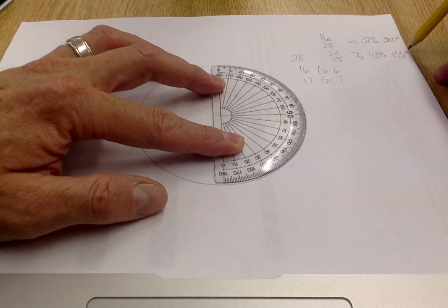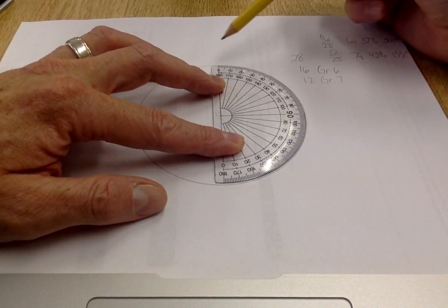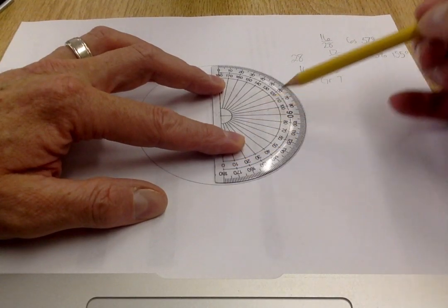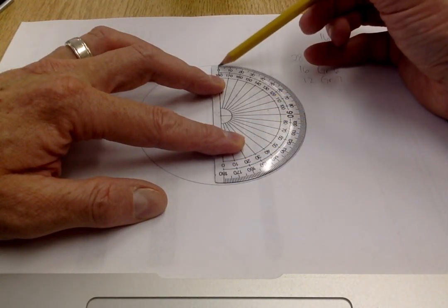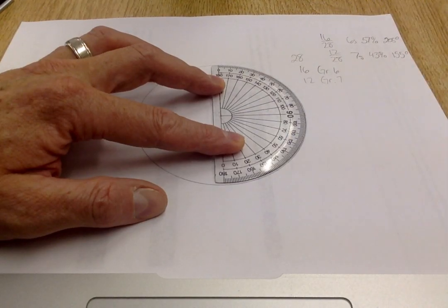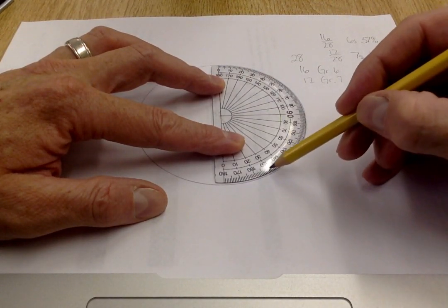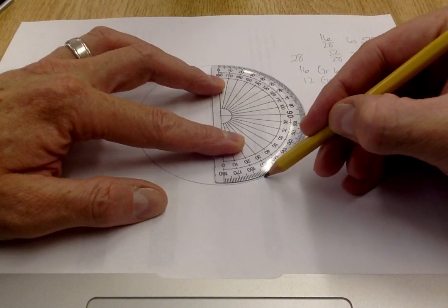My first measurement is 155 degrees. I'm going to start at the zero, which in this case is on the outside as opposed to the zero which is on the inside. I need to start at zero and I'm going to count up: 10, 20, 30, 40, all the way up to 155 degrees.